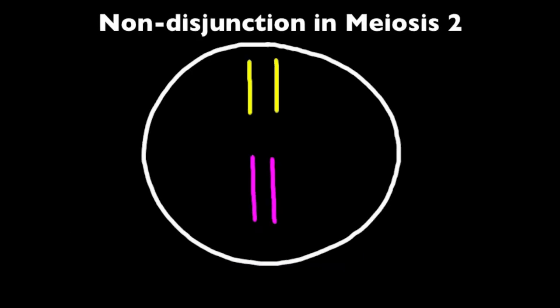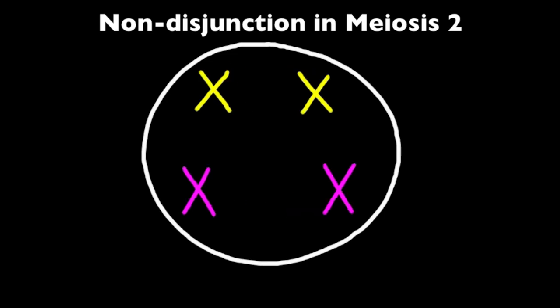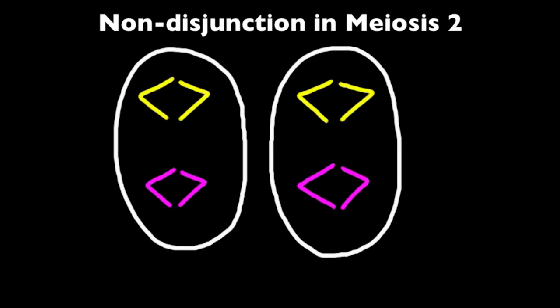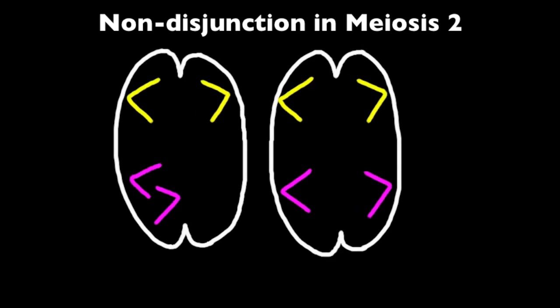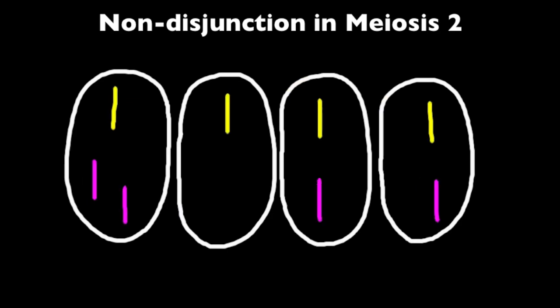In this second example, we'll show nondisjunction in anaphase 2 of meiosis 2. So you can see the pink sister chromatids on the left hand side fail to separate into separate daughter cells. Of the four daughter cells produced in this example, one of them will have one extra chromosome, N plus 1, one will be short by one chromosome, N minus 1, and the other two will have the normal number of chromosomes, N.